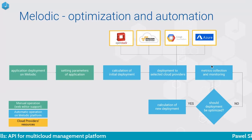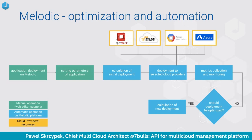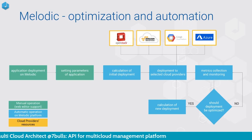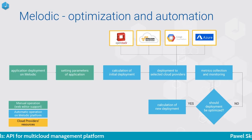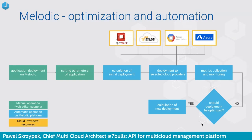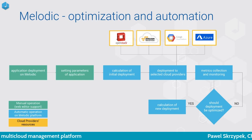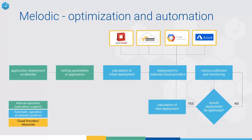After deployment, Melodic starts to collect metrics. Based on the value of those metrics, the decision of whether reconfiguration is needed is taken automatically. After that decision, Melodic looks for the new optimal solution. If it finds one, the application is automatically reconfigured — new resources are added, some resources are removed, and some are scaled vertically or horizontally. Everything is done automatically through the API.